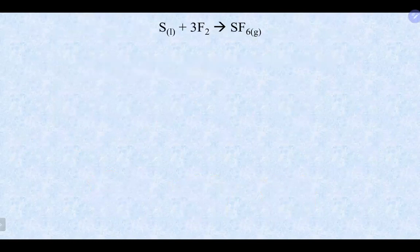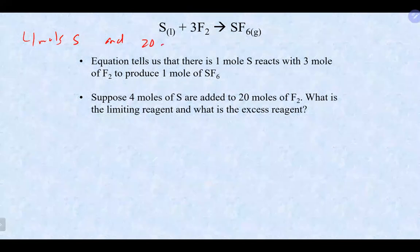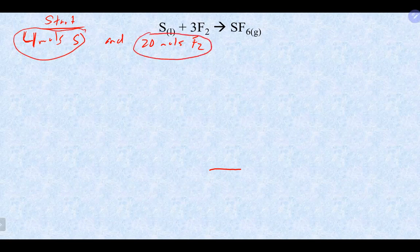Let's look at an equation and talk through the steps to determine the limiting reagent. Let's say we start with 4 moles of S and 20 moles of F2. We recognize immediately that we have moles of both reactants, which tells us this is definitely a limiting reagent problem.